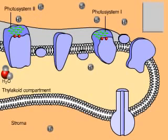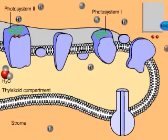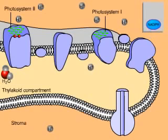Energized electrons from photosystem 1 are passed down an electron transport chain and added to NADP plus to form NADPH. Meanwhile, energized electrons from photosystem 2 are passed through another electron transport chain.